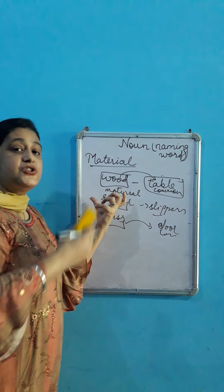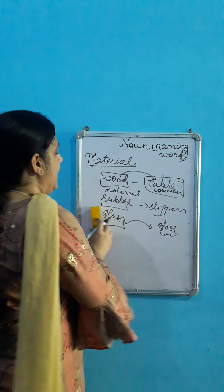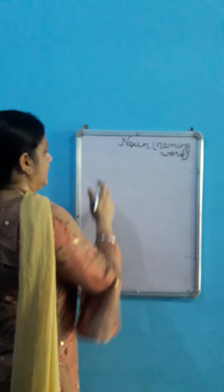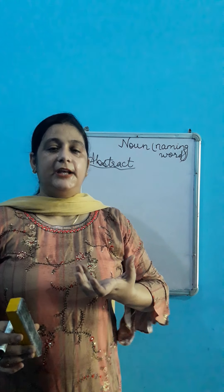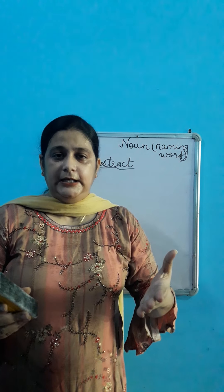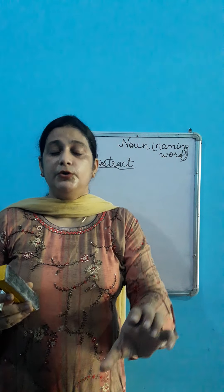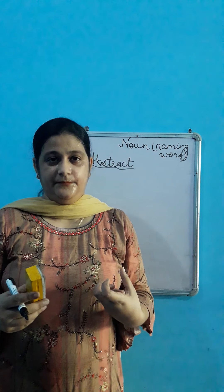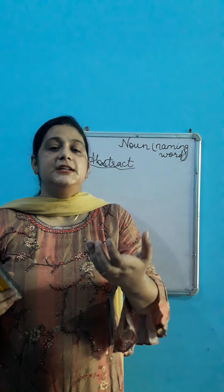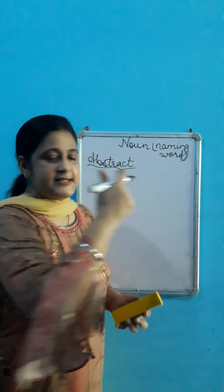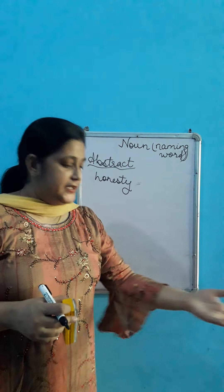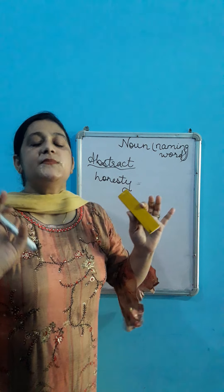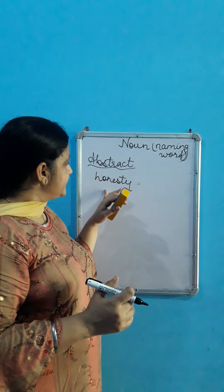Is it clear to you? Material noun kya hote hain? Jis se koi cheez aage banti hai. I hope this is clear to you. And the last is abstract noun. Abstract noun kya hote hain? Abstract noun is a name of a state of being, state, feeling. Matlab kya hote hain? Aisi cheez jis ko hum feel kar sakte hain, dekh nahi sakte, chhu nahi sakte, sirf mahsus kar sakte hain. For example, honesty. Ab honesty kya hai? Hum dekh sakte hain ki honesty kahan padi hai? Nahi — hum mahsus kar sakte hain. Kisi ke actions se feel kar sakte hain usko. Toh honesty kya hai? Abstract noun.